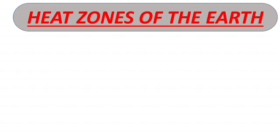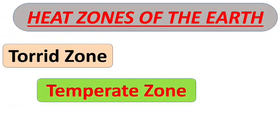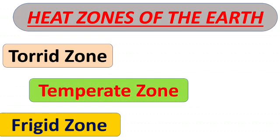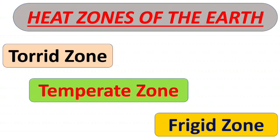Taking all these factors, earth is divided into three heat zones: Torrid zones, Temperate zones, and Frigid zones. Now let's have a look at these zones in detail.